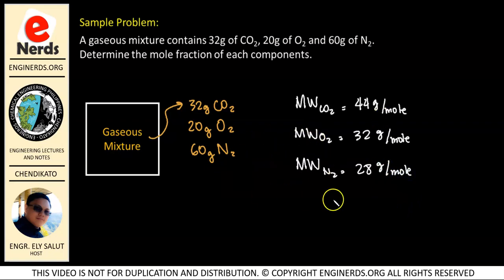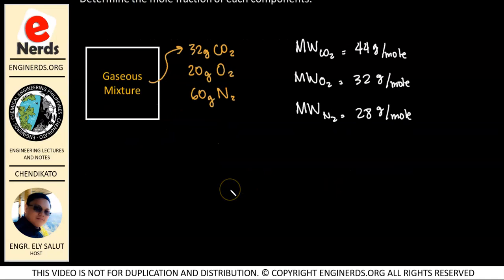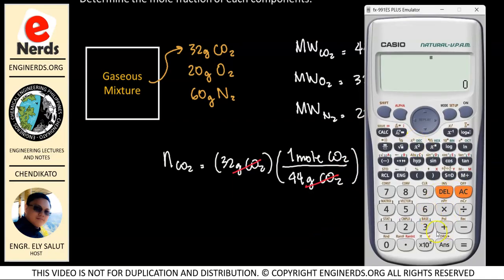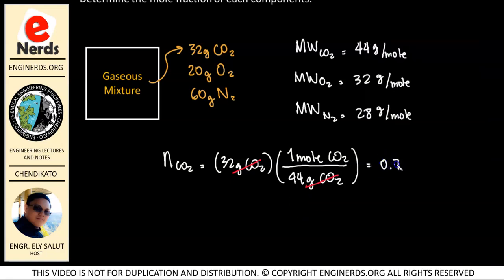We can now determine the number of moles of each component. Starting with CO2: the number of moles of CO2 equals 32 grams divided by 44 g/mol. The grams cancel out, and using a calculator, 32 divided by 44 gives us 0.727 moles of CO2.